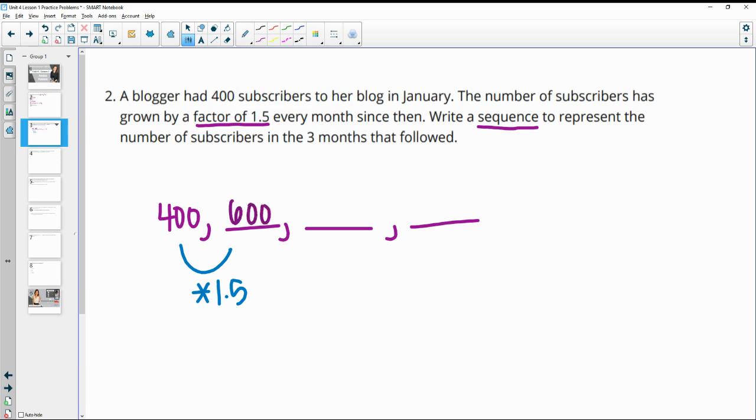Then multiply by 1.5 again and we get 900. And then multiply by 1.5 again and she would be at 1350 subscribers by that third month.